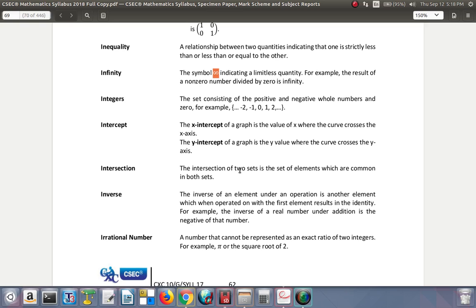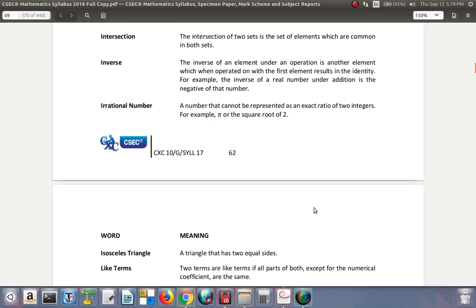Intersection: the intersection of two sets is the set of elements which are common in both sets. Inverse: the inverse of an element under an operation is another element which, when operated on with the first element, results in the identity. For example, the inverse of a real number in addition is the negative of that number.